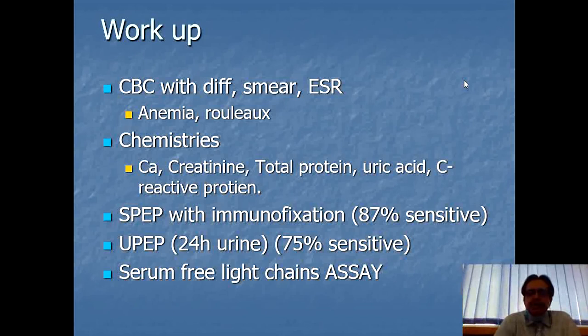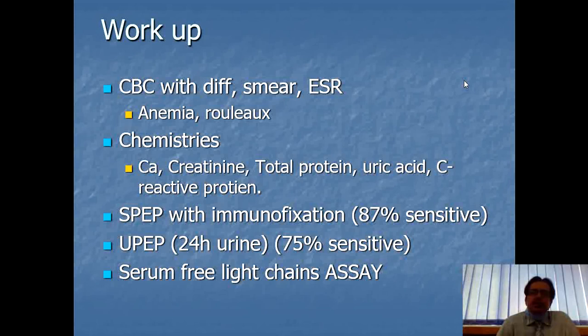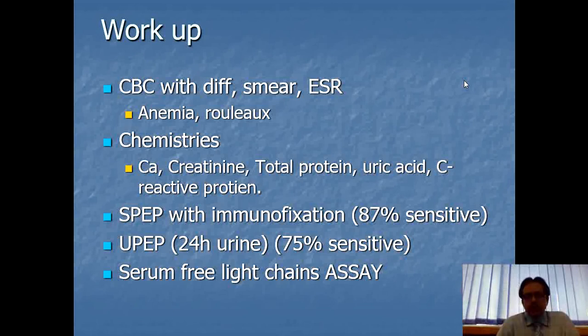For workup, perform a CBC with differential count and peripheral blood smear. ESR will be high, greater than 100. The patient may have anemia, or sometimes pancytopenia — any one, two, or all three cell lines can be affected. Rouleaux formation may also be seen — stacks or aggregation of RBCs on the peripheral smear.